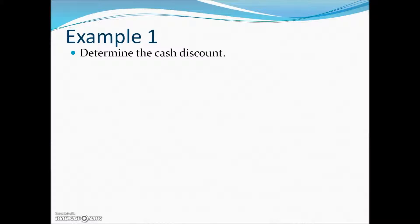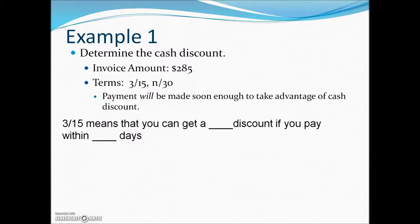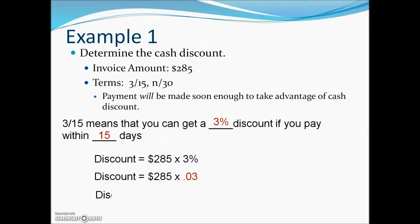In this first example, they want us to determine the cash discount. The invoice amount is $285. Terms are 3/15 net 30, and payment will be made soon enough to take advantage of the cash discount, which means within 15 days. The term 3/15 means you're going to get a 3% discount if paid within 15 days. So we take the base — $285 — times the rate to give us our part, which is the discount. Converting that percent as a decimal and doing the multiplication, this individual would be able to reduce their invoice amount by $8.55 if paid within the 15 days indicated by the terms.